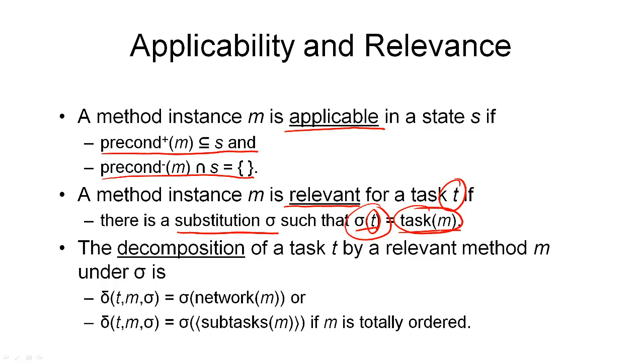And if we have a task network that contains a task t, and we have a method that is relevant for this task under some substitution σ, then we can apply this method by decomposing the task. So we define the decomposition of a task t by a relevant method m under substitution σ, and we define it as follows. We define a decomposition function δ that takes exactly those three arguments: the task, the method, and the substitution.